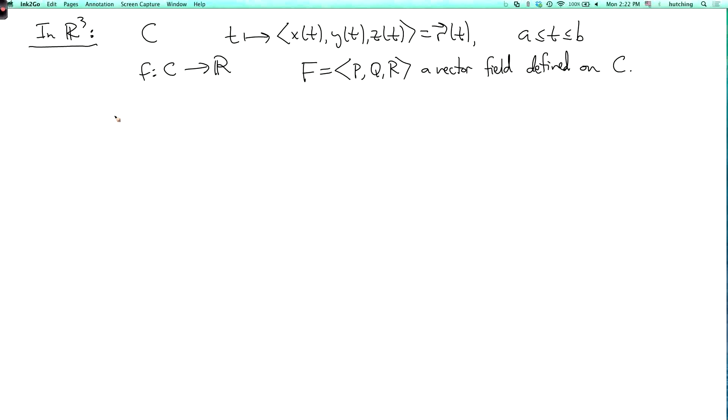Then the integral over C of f ds is the integral from a to b of f(x(t), y(t), z(t)). So that's the square root of x'(t)² plus y'(t)² plus z'(t)² dt, or you could write this a little more compactly in vector form as f(R(t)) times the length of the velocity vector R'(t) dt. So that's integral with respect to arc length. You can do this actually in any number of dimensions. It's completely analogous.